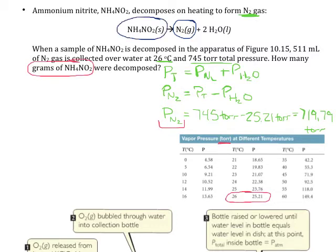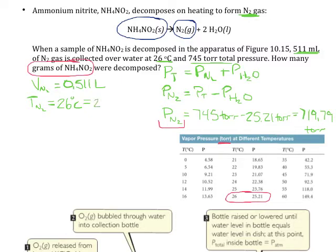How are we going to figure out how much nitrogen gas? Well, looking at the information we know, we now know the pressure of the nitrogen gas, we know its temperature, and we know its volume. So we know that the volume of N₂ is 0.511 liters, the temperature is 26 degrees C, which we need to convert to Kelvin: 299.15 Kelvin.